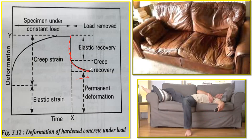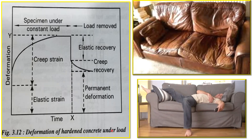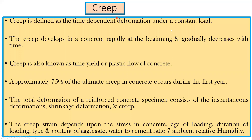This creep recovery happens with respect to time as we move along the x-axis. After some time — one or two months — your sofa set may have recovered some amount, but then there is a remaining permanent deformation you can see in the sofa set. This is the permanent deformation in the structure. This permanent deformation that is never recovered is what we call creep, and hence creep is defined as a time-dependent deformation under a constant load.